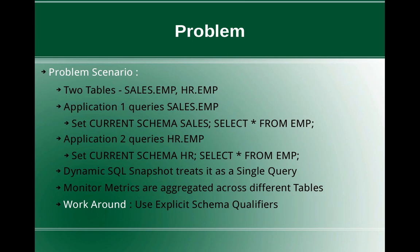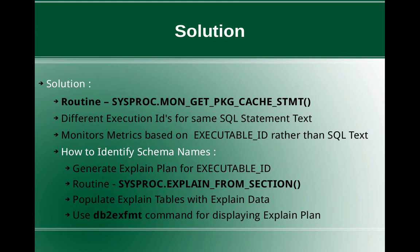So what is the solution for this? One workaround is to use explicit schema qualifiers. Instead of saying 'select star from EMP', you can say 'select star from sales.EMP' or 'select star from HR.EMP' — then it will be treated as different queries, but that requires an application change. If you are debugging and landing up in such a scenario, the solution is to use the routine sysproc.mon_get_pkg_cache_stmt. You can refer to the info center for detailed documentation on this routine.